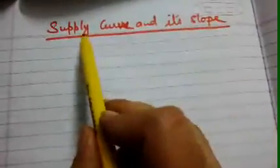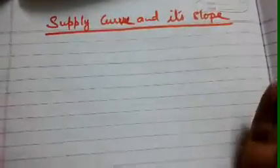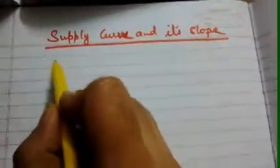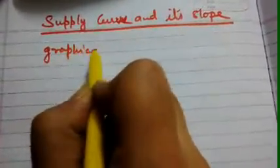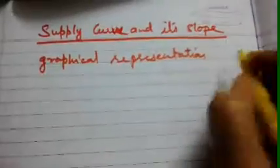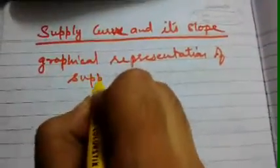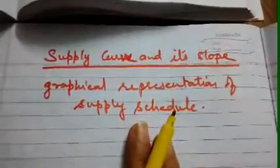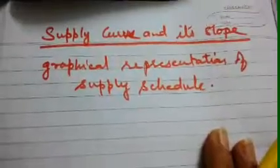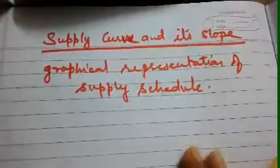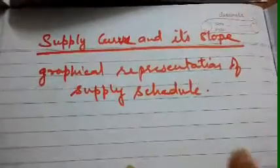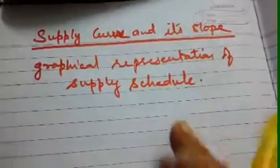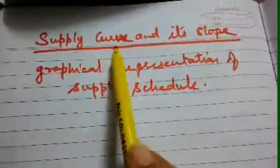We are going to talk about supply curve and its slope. What is a supply curve? It is a graphical representation of a supply schedule. Whatever supply schedule is given to you, whether it is a market supply schedule or an individual supply schedule, when we represent that supply schedule data in the form of a graph, it is called the supply curve.